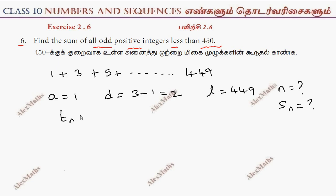Now, TN is a plus n minus 1 into D, but TN is L, so a plus n minus 1 into D.